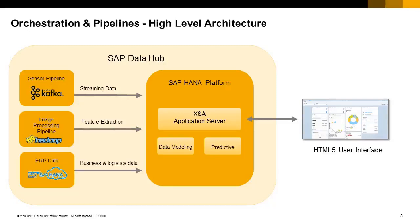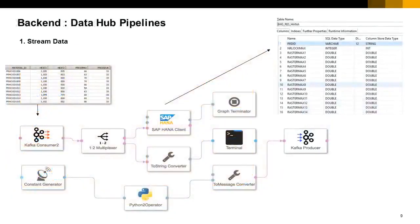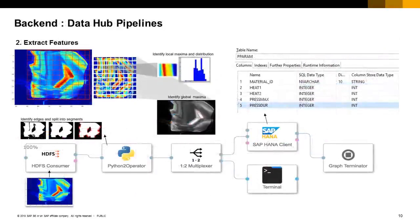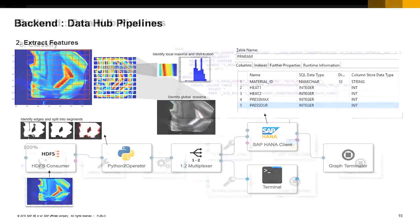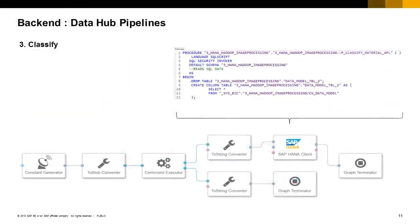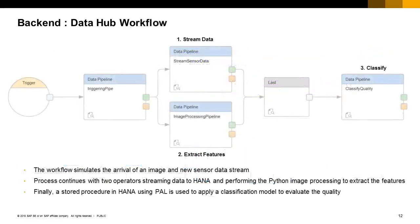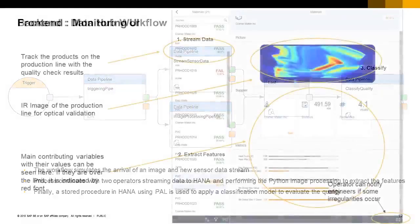which runs the SAP HANA Predictive Analysis Library to display quality results in DataHub. The first pipeline streams sensor data including the temperature and pressure for each part. The next pipeline extracts features from infrared camera images using Python code. The third pipeline utilizes the HANA Predictive Analysis Library to classify the data. This process repeats in real-time to continually evaluate the quality of the parts with the task workflow that can be scheduled in the SAP DataHub cockpit. Finally, the quality data is displayed in the monitoring interface to allow for efficient quality checks.